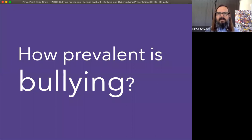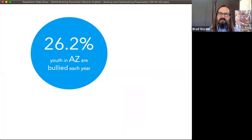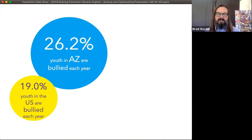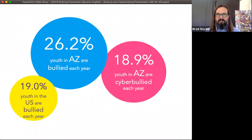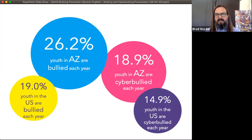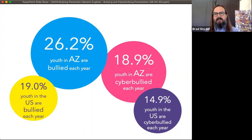How prevalent is bullying and cyberbullying? Roughly a quarter of youth in Arizona report being bullied in a typical year, while the national average is closer to 19%. About 19% of kids in Arizona experience cyberbullying in a typical year, also higher than the national average. Again, you can see that roughly 50% more kids experience in-person bullying than cyberbullying.